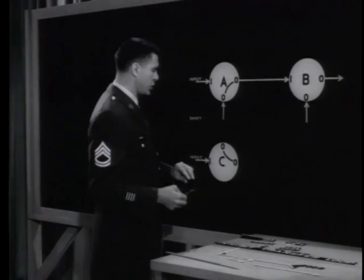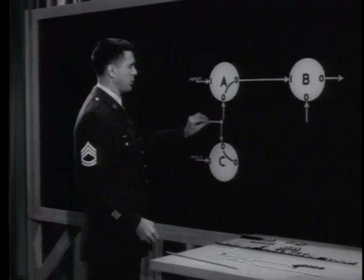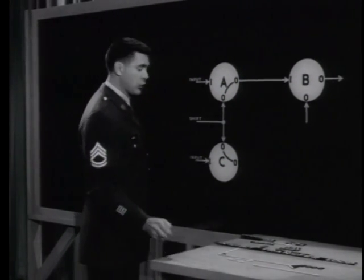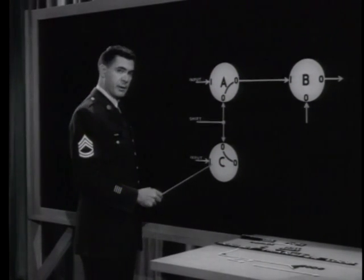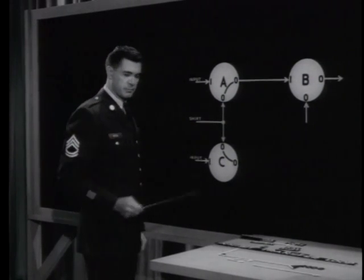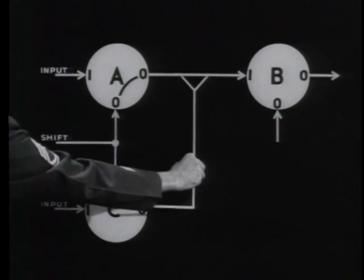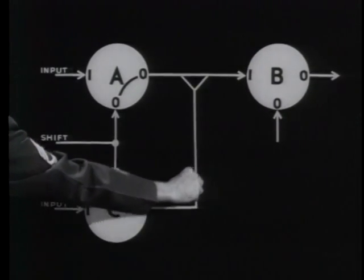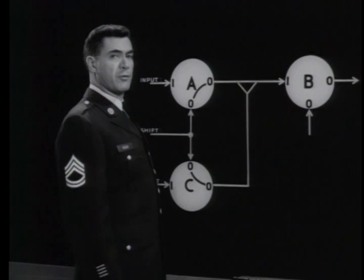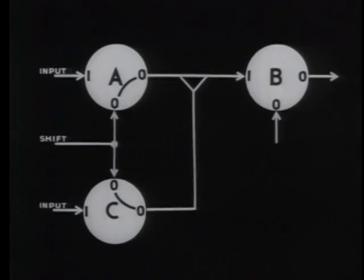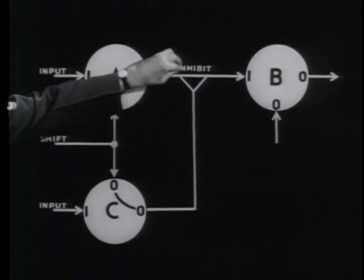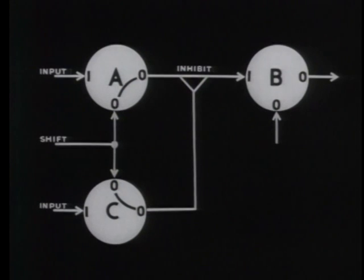The third core, C, has its own non-dot input, and it shares the shift pulse with core A. If core C is at one, the shift pulse will clear it back to zero. The change in flux will produce an output, but this output from C serves a special purpose: whenever it occurs, it will prevent or inhibit the flow of current from core A to core B. This action gives the loop its name — the inhibit transfer loop.